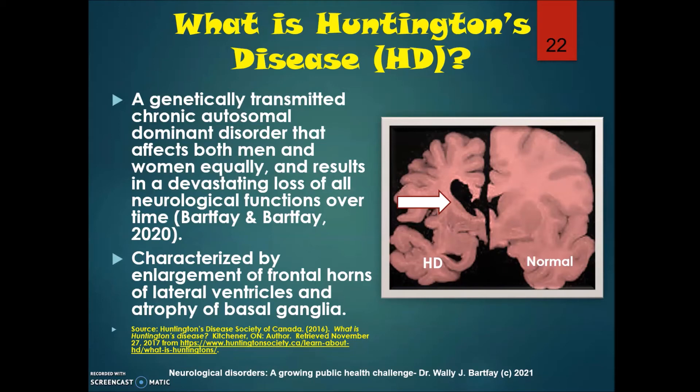What is Huntington's disease (HD)? Huntington's is a genetically transmitted chronic autosomal dominant disorder that affects both men and women equally and results in a devastating loss of all neurological functions eventually. The HD brain is characterized by an enlargement of the frontal horns of the lateral ventricles and atrophy — shrinking — of the basal ganglia, as visible in the photo comparing an HD brain to a normal one.